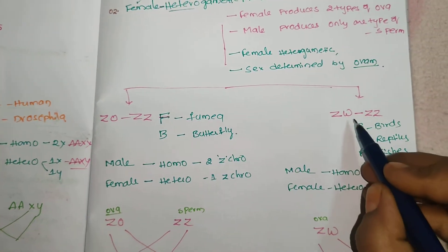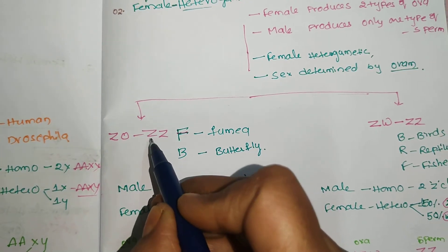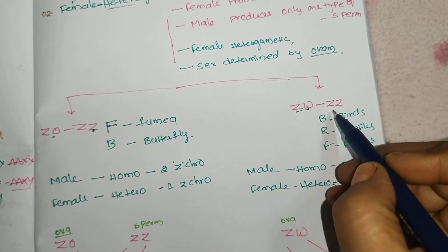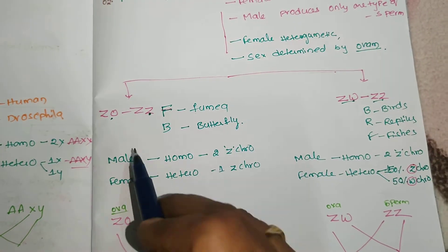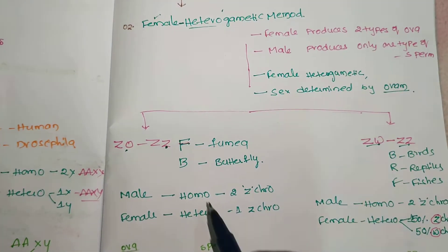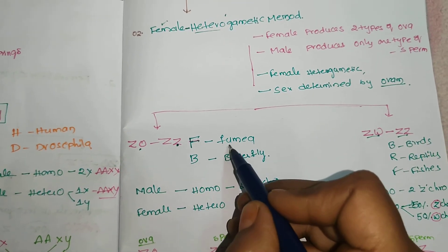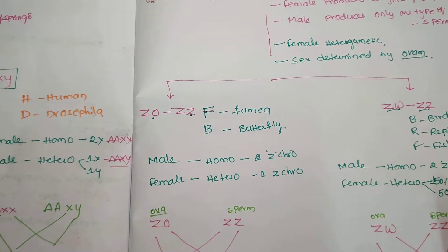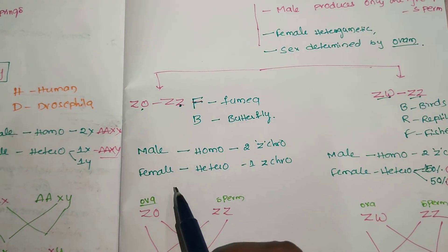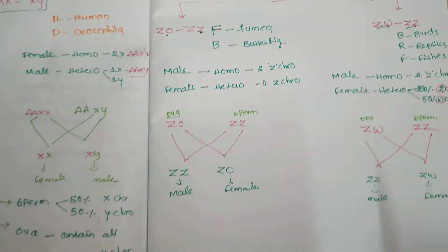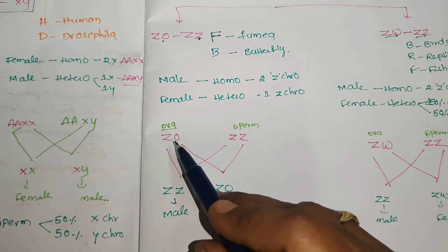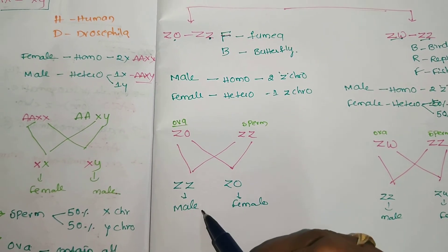Female heterogametic has two types: ZO/ZZ and ZW/ZZ. Remember: homo means same — that is the male; hetero means different — that is the female. So in female heterogametic, remember FB, just like Facebook: F for Fowl (Femia), B for Butterfly. This is important for MCQs. In the ZO/ZZ type (FB organisms), the male is homogametic with two Z chromosomes, and the female is heterogametic with only one Z chromosome and one 0. The heterogametic condition of the ova decides the sex of the offspring.